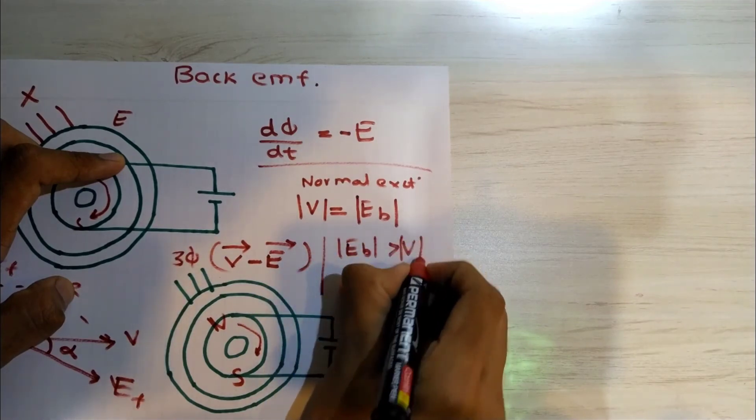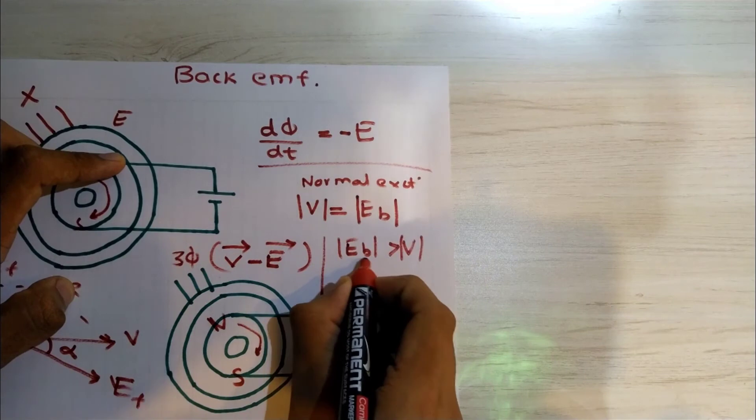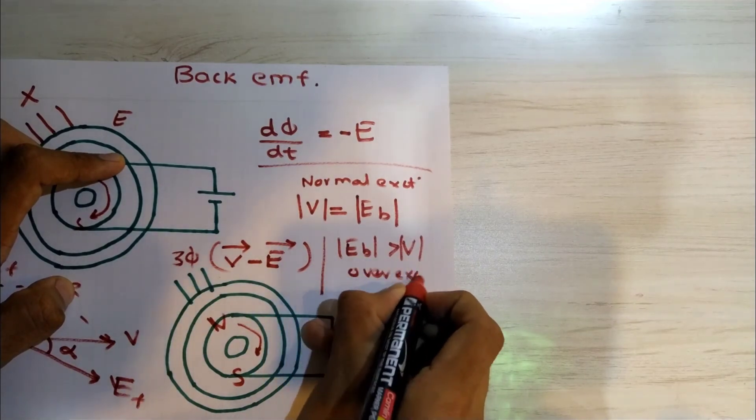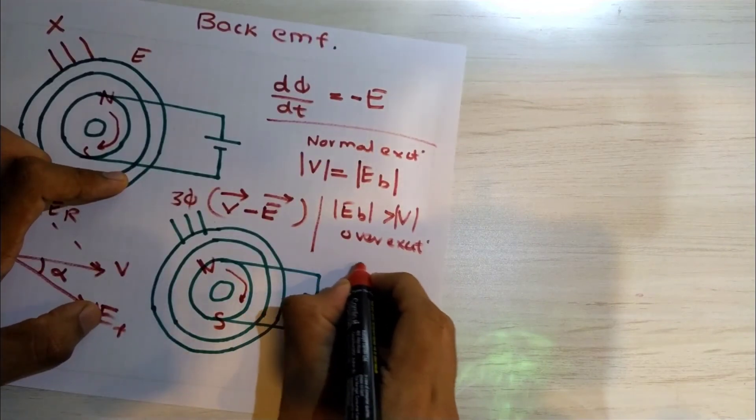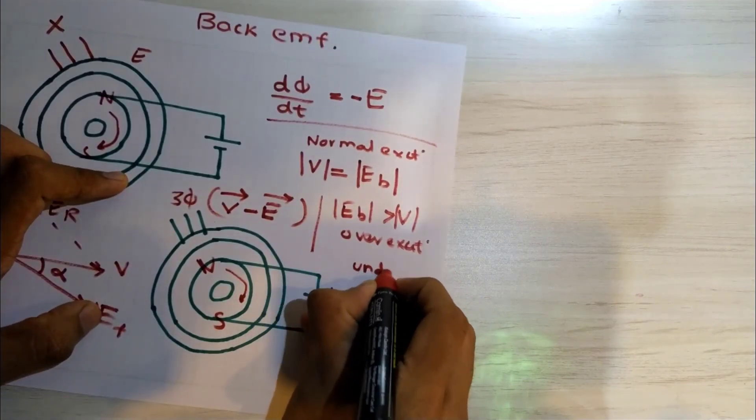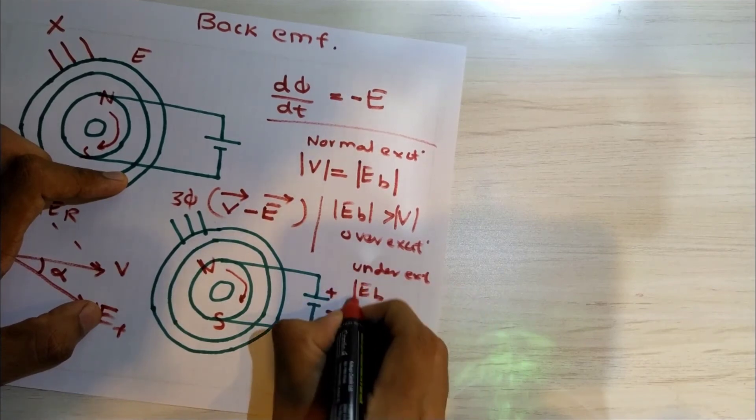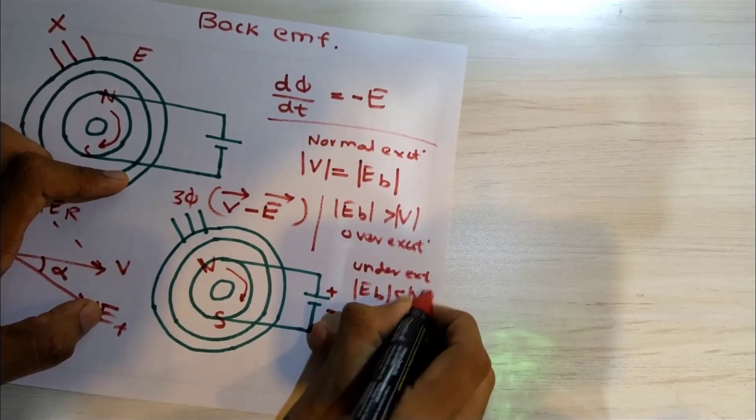For over excitation, the value of back EMF is greater than V. Similarly, for under excitation, the value of EB should be less than V. These are all magnitudes.